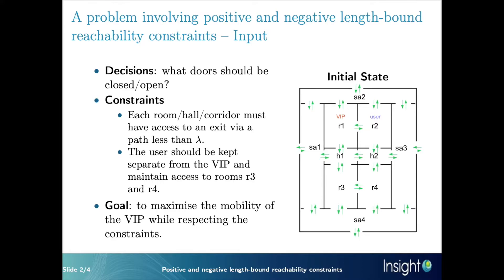We have a VIP located in R1 and a user in R2. We restrict mobility in the building by restricting the way how we traverse a door. If the corresponding arrow is green, it means we can traverse the door in that direction. In this initial state, all doors can be used in any direction.